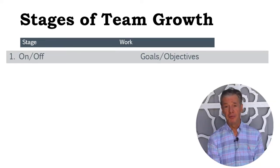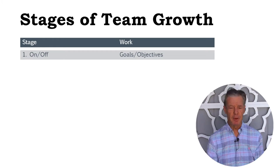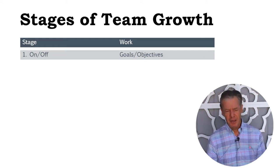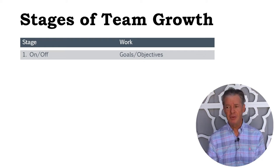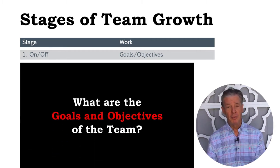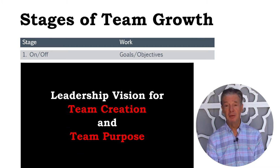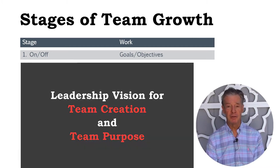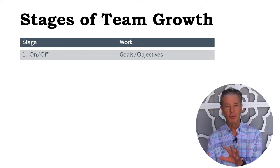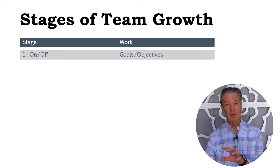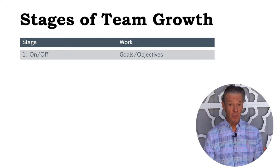The first stage is a very simple one: are you on or off the team? In sales, you've got people who are highly engaged and super motivated — it's like, yeah, I'm on the team. But you might be on the payroll — are you on the team? To answer that question, you need to be clear on what the goals and objectives of the team are, and underlying that is the leadership vision for why this team was even created and what its purpose is. The vision and the goals and objectives of the team, and your alignment to those, are really the test of whether you're on the team.